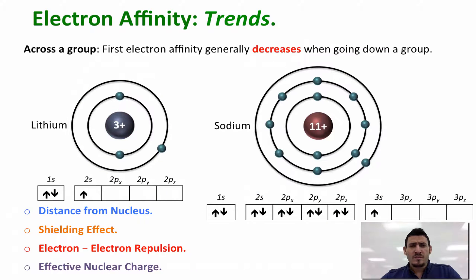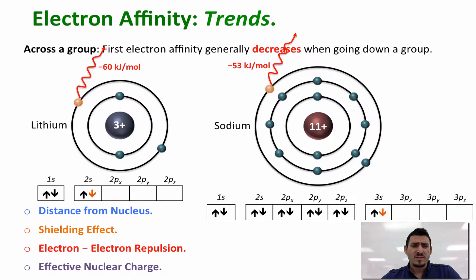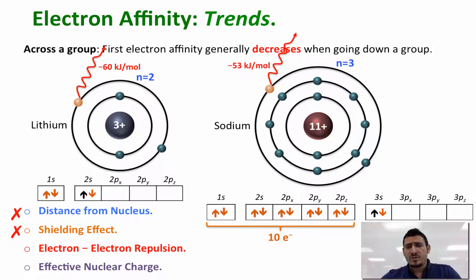Now let's discuss what makes the first electron affinity decrease when we go down a group. Consider lithium and sodium, where sodium is directly below lithium. Adding an electron to each, the energy released for lithium is higher than for sodium. The reason is that the electrons are not added to the same energy level, so the distance from the nucleus differs. Also, the electron added to lithium is shielded by only two inner electrons, whereas the electron added to sodium is shielded by 10 inner electrons. Electron-electron repulsion is the same in both cases, and effective nuclear charge does not play a major role here. So the two main reasons are the distance from the nucleus and the shielding effect.